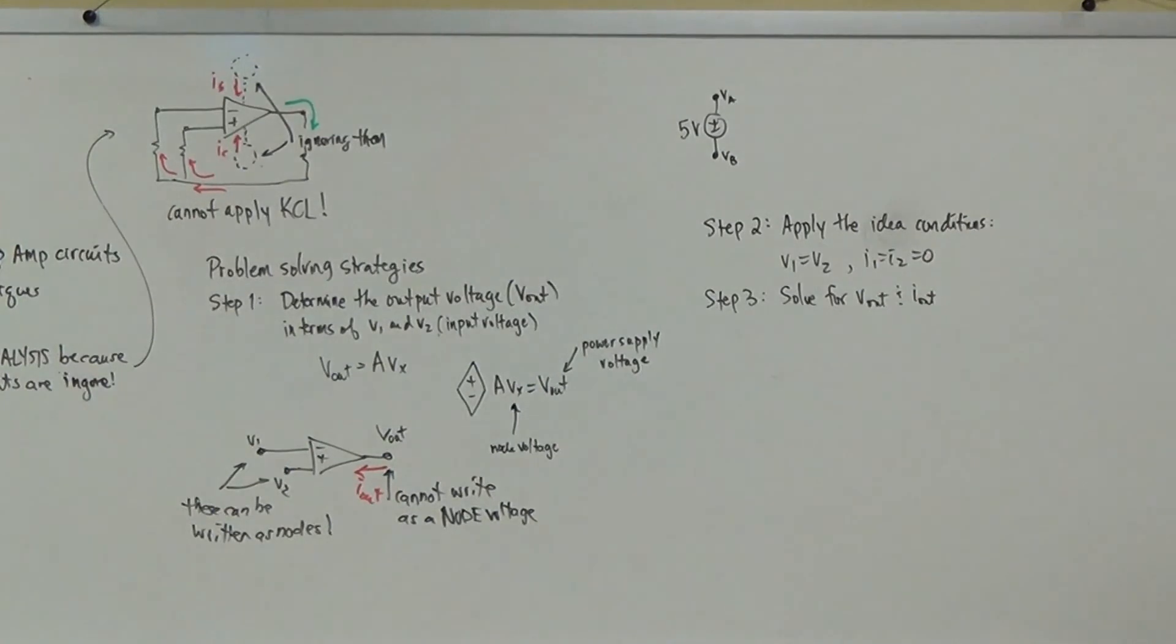I_out goes into the op-amp? Yeah, that's just the definition. The definition is that currents are positive if they flow into the node. That's the definition. Dude, I'm about to do examples so I'm going to stop right here.